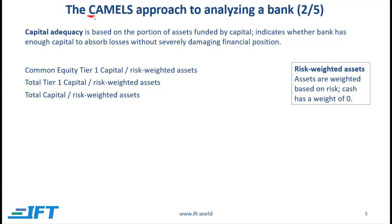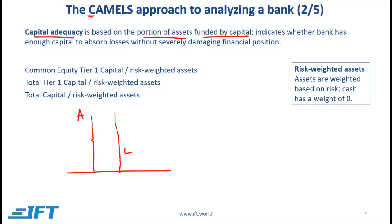The first component of the CAMELS approach is capital adequacy, based on the portion of assets funded by capital. Looking at a simple bank balance sheet, assets are funded by liabilities — generally deposits — and by capital. The capital adequacy requirement ensures there is enough capital in case the value of assets goes down. Think of C for capital, C for cushion: capital provides a cushion, and the thicker this cushion, the safer the bank. This cushion is measured as capital divided by total assets — the higher this ratio, the better.